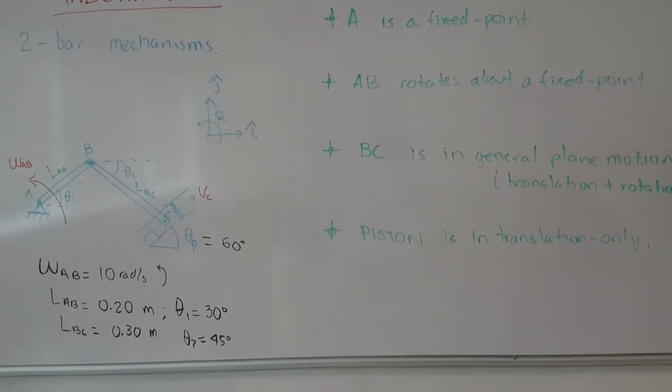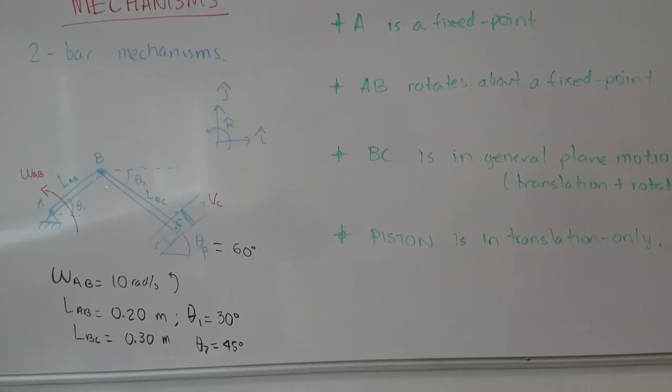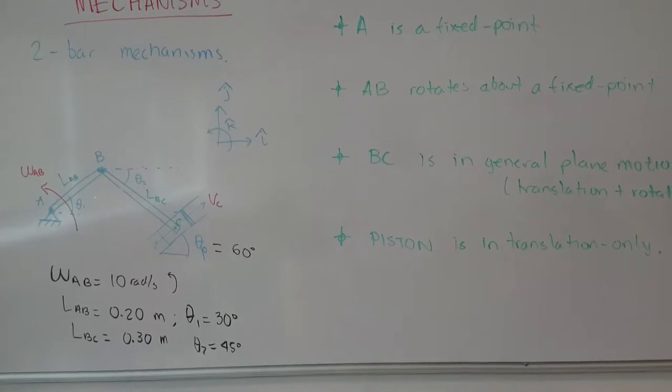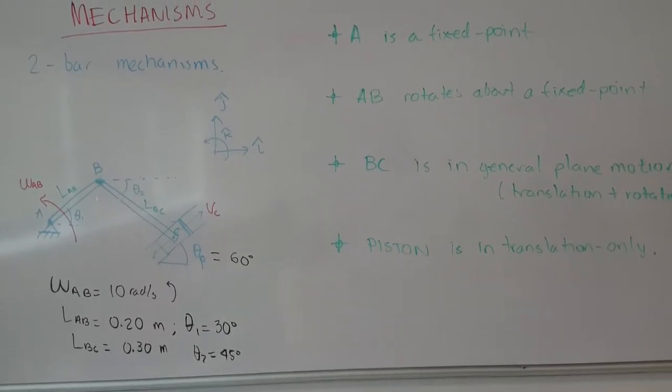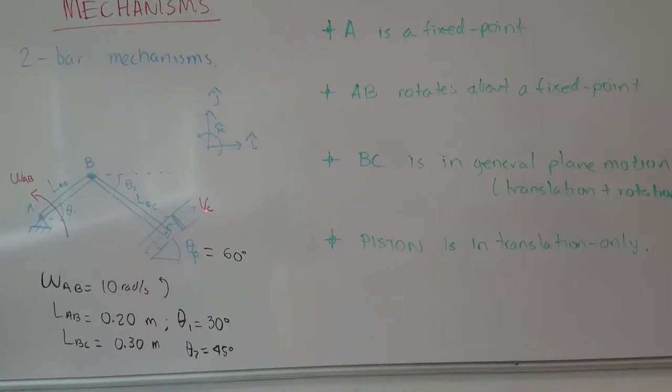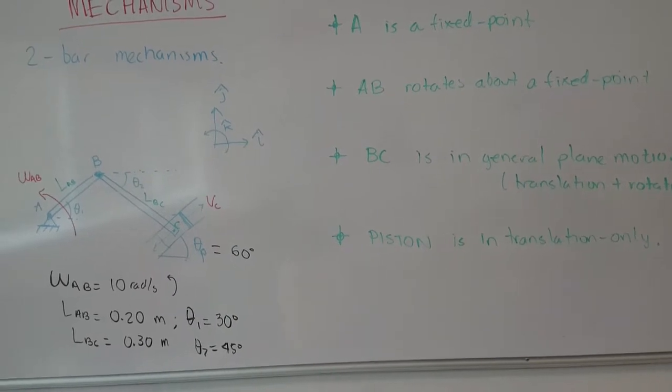So we have the three types of motion that we have seen last month: rotation about a fixed point for bar AB, translation only for the piston, and general plane motion for bar BC.